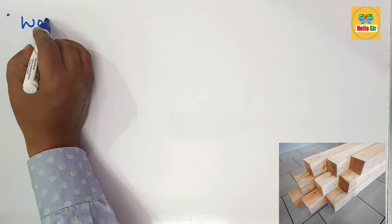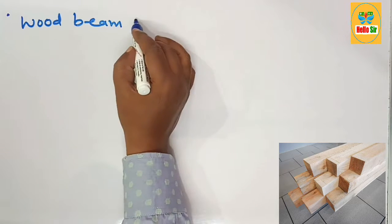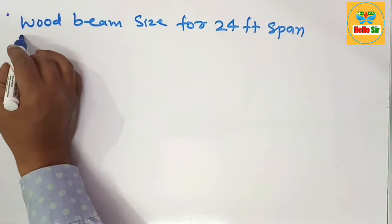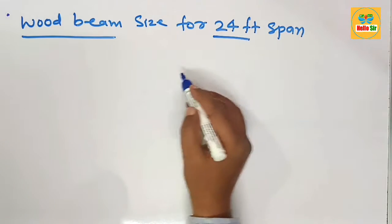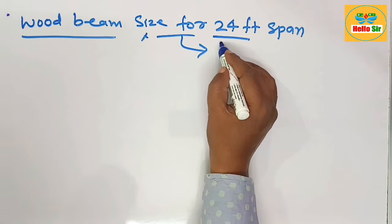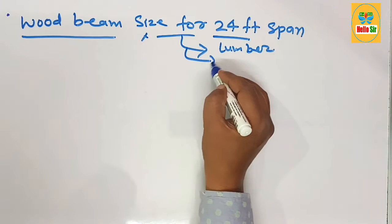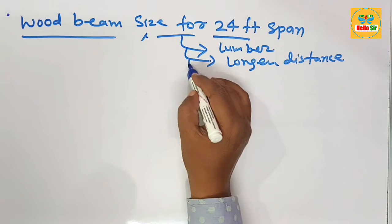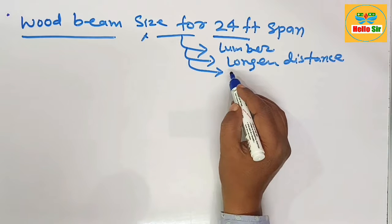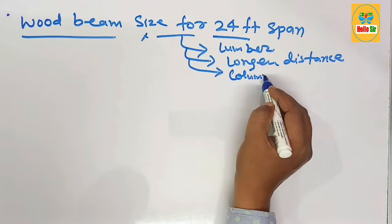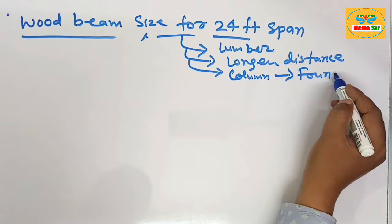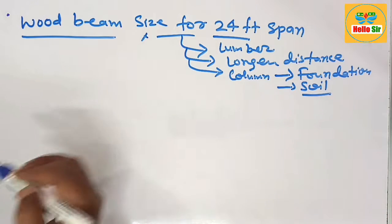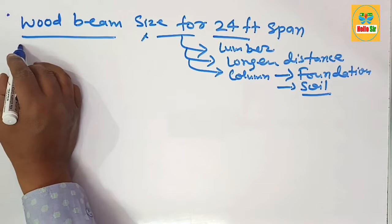In this video, we learn about wood beam size for a 24-foot span. The wood beam is a composite piece of three-dimensional lumber required to span longer distances. It can support live load, dead load, and seismic load of the structure, transferring their weight down to the column, then to the foundation, and ultimately all the load goes to the soil.